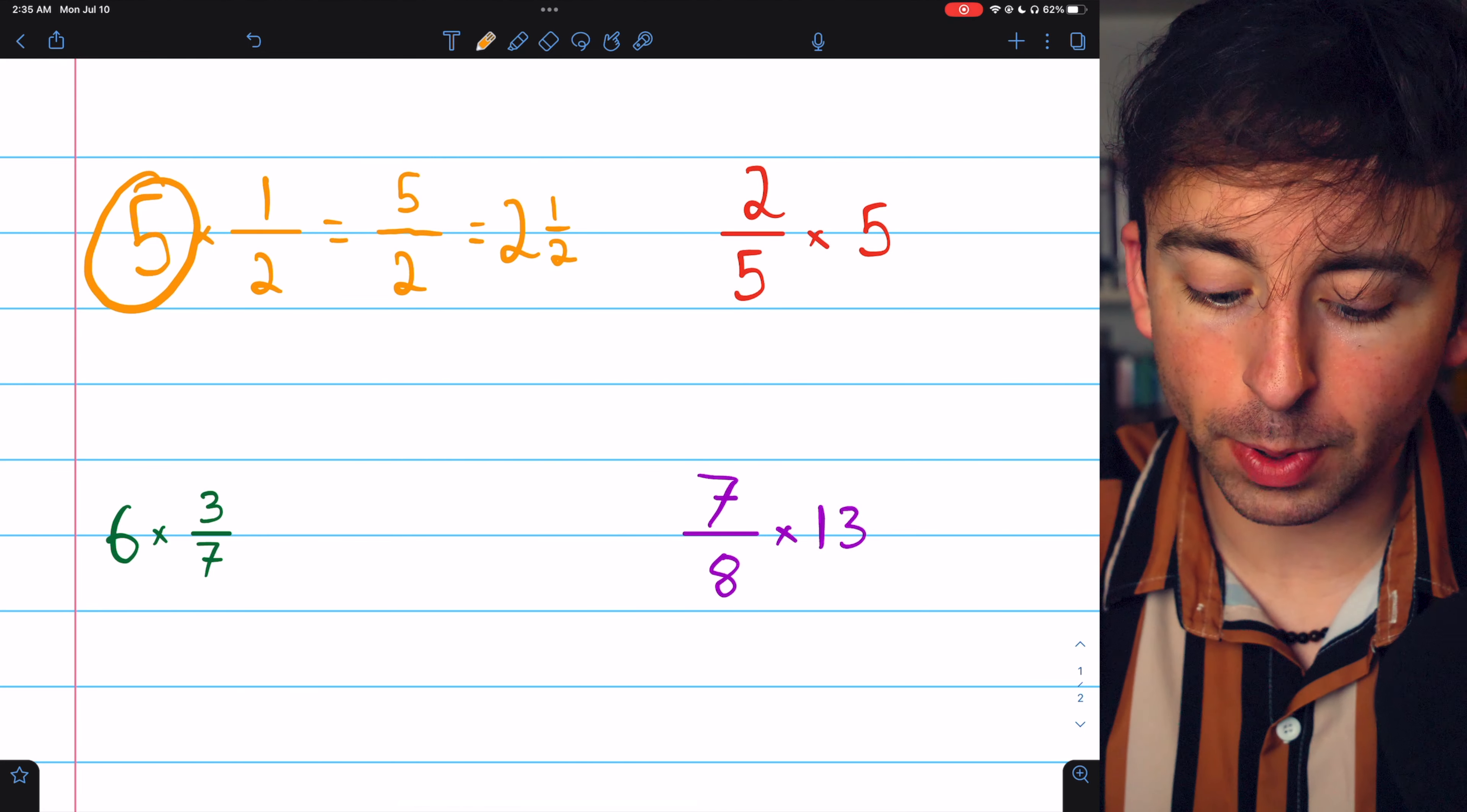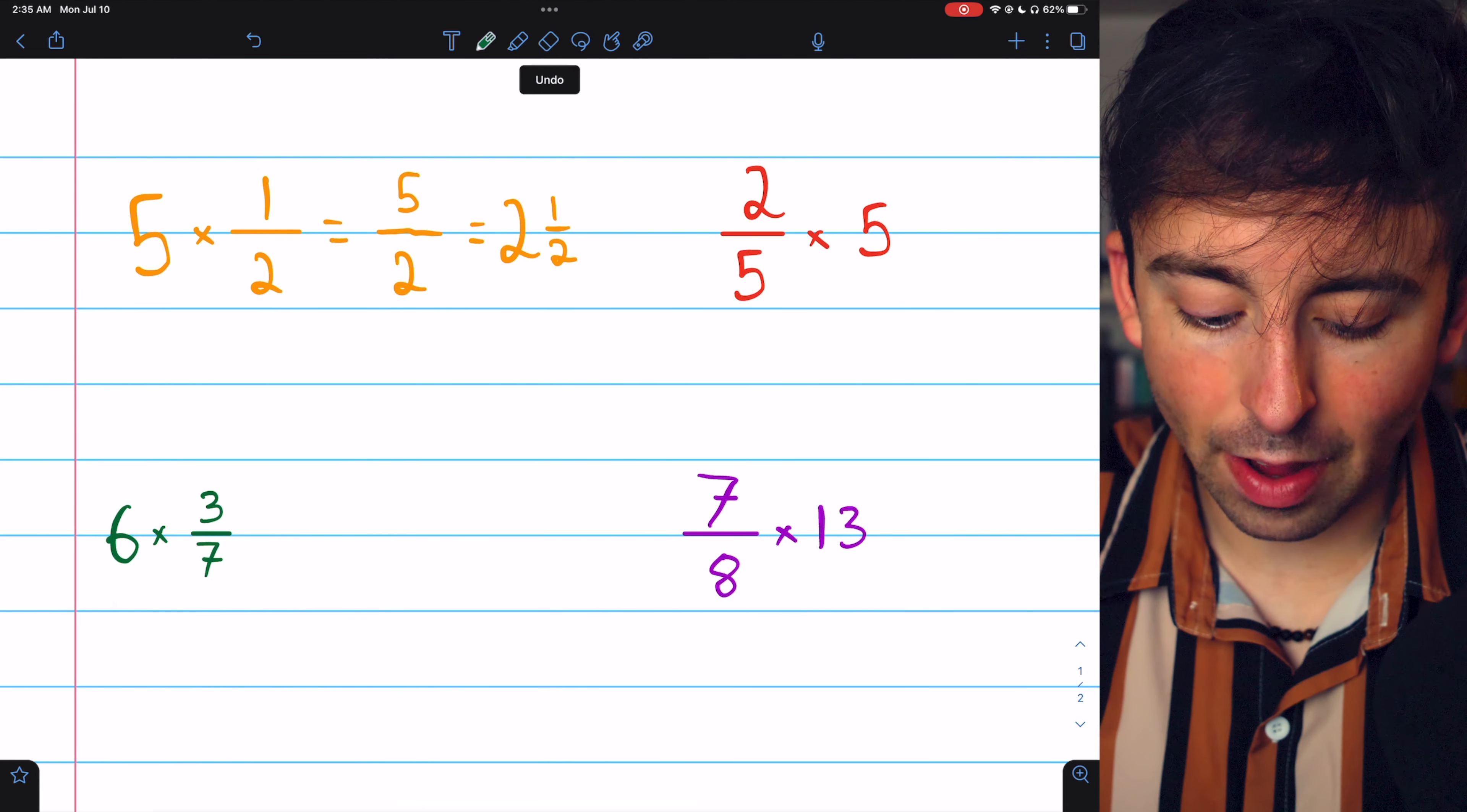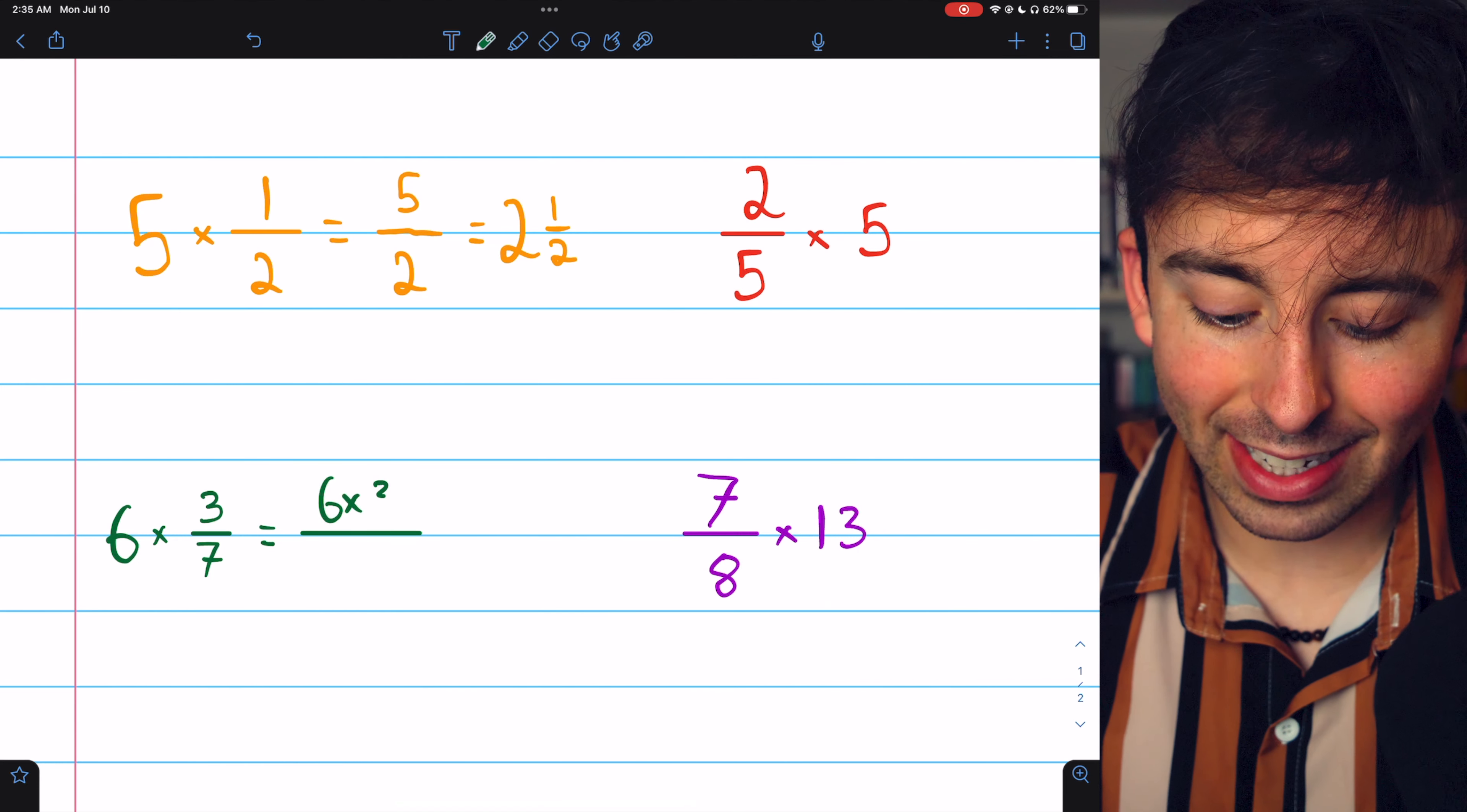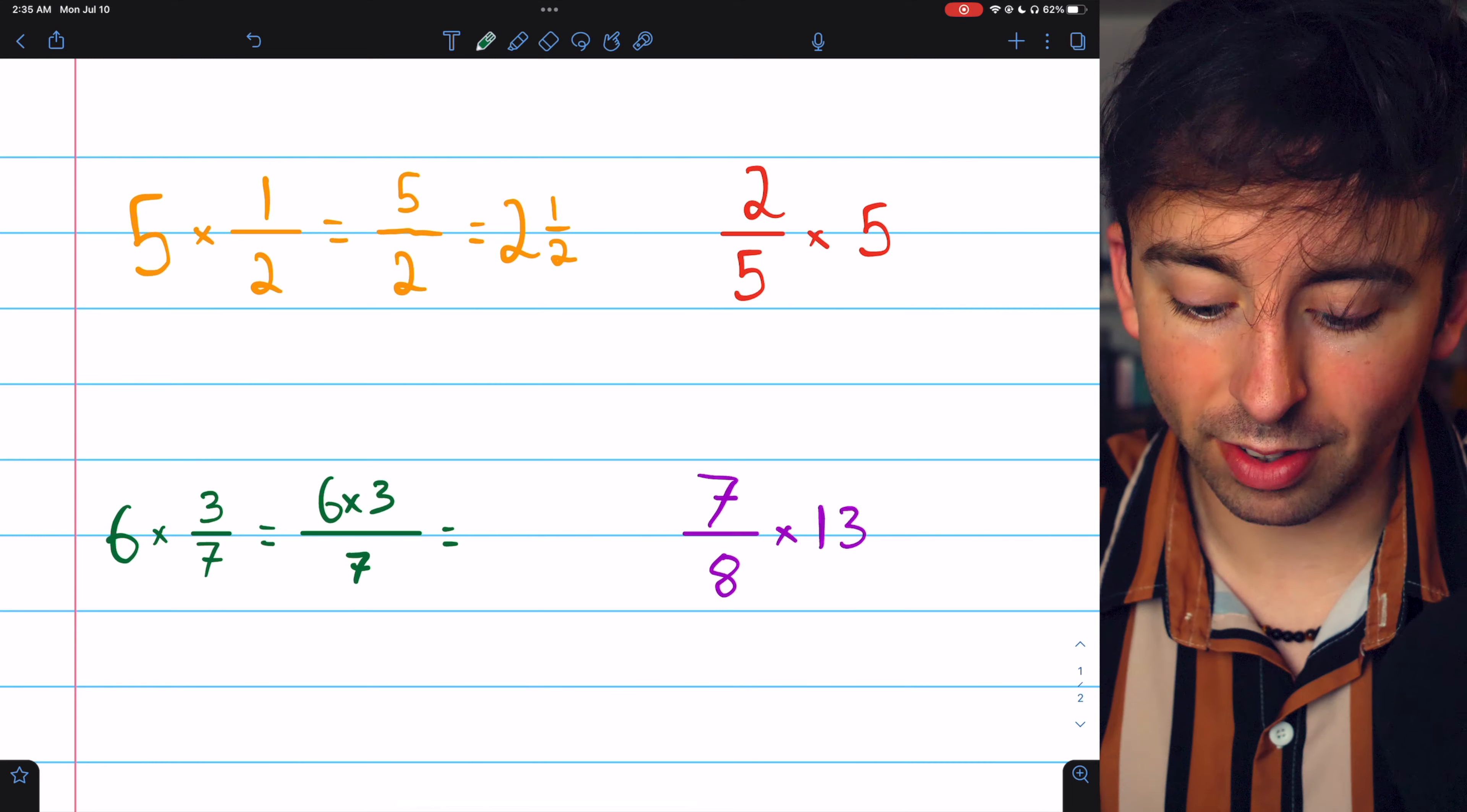Again, all we have to do is multiply the whole number by the numerator. What about 6 times 3 sevenths? Well, 6 times 3 is 18. So if I have 6 times 3 over 7, that's equal to 18 over 7.